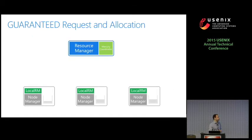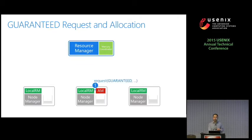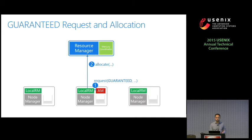Now let's see how we do the request and allocation of different container types. For guaranteed containers: the application master gets started in one of the nodes, and then it talks to the local RM and specifies that it wants a guaranteed container. The local RM sees that this is a guaranteed container and forwards the request to the central resource manager — this is like stock YARN. The resource manager replies with the allocation, and then the application master can start the container on one of the nodes.